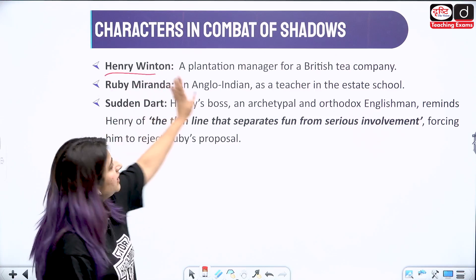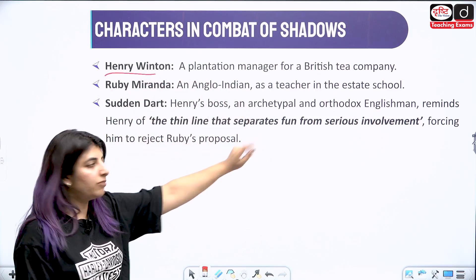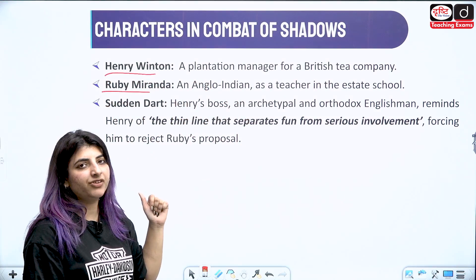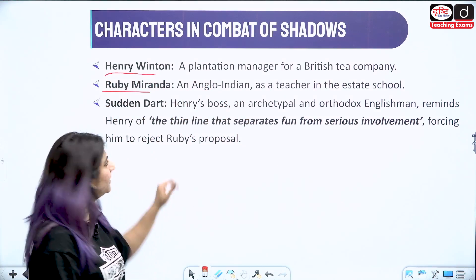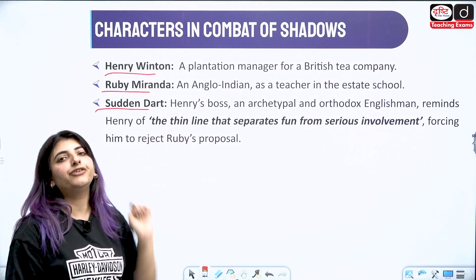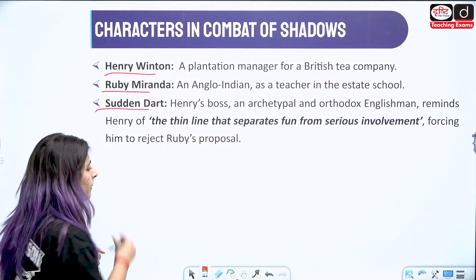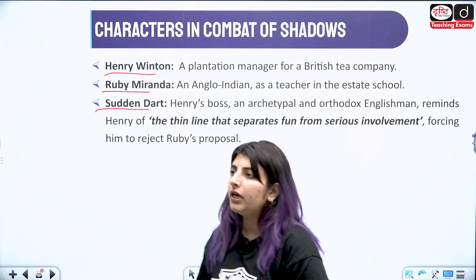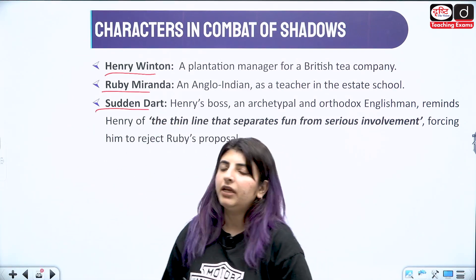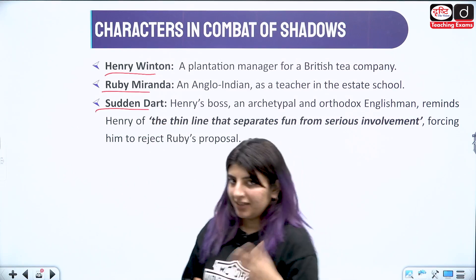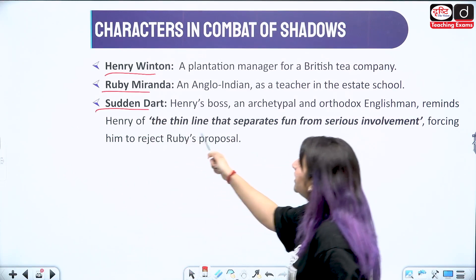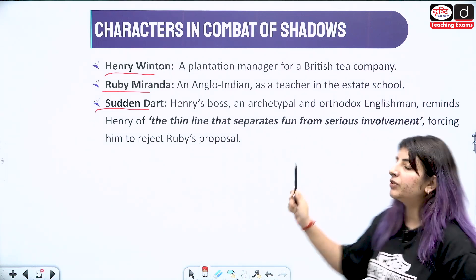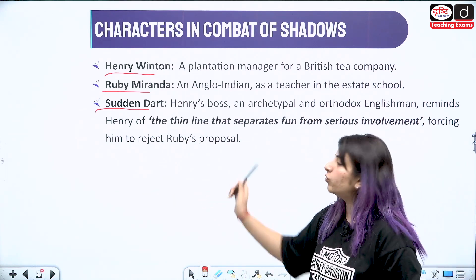The characters are: Henry Winton, who is a plantation manager; Ruby Miranda, the Anglo-Indian woman we were talking about; and Sundar Das, who is the boss of Henry. Sundar Das does not want Henry to get involved with Ruby in an emotional sense — there is a thin line that separates fun from serious involvement, forcing him to reject Ruby's proposal.